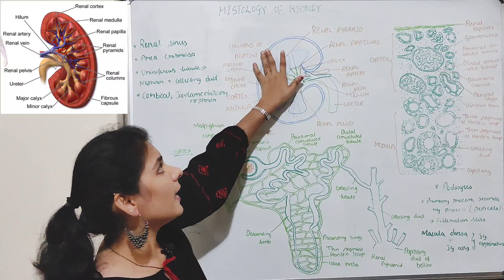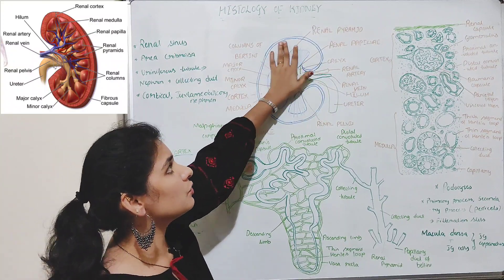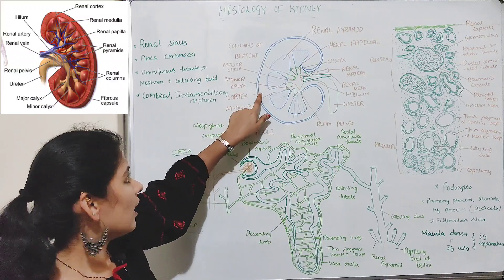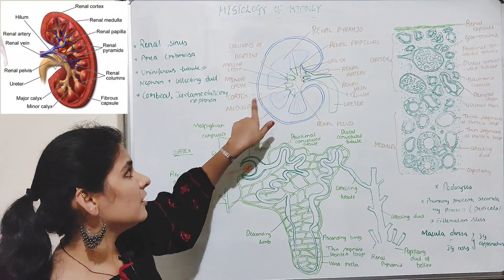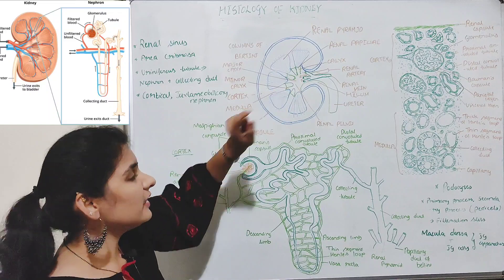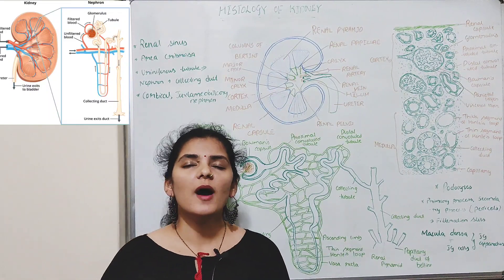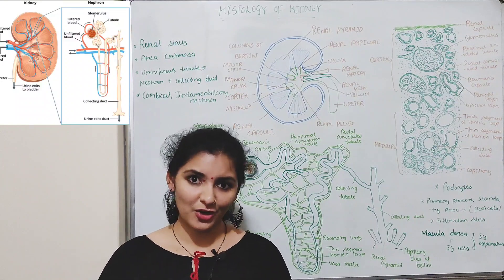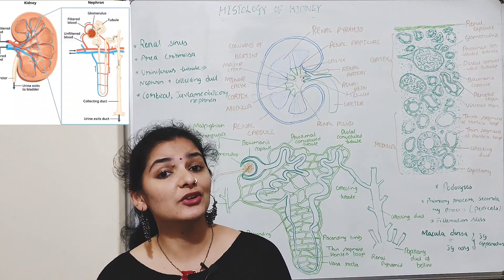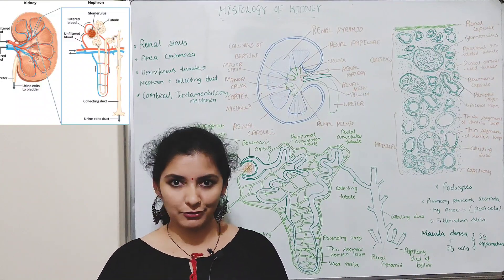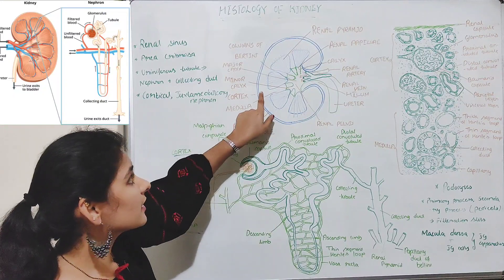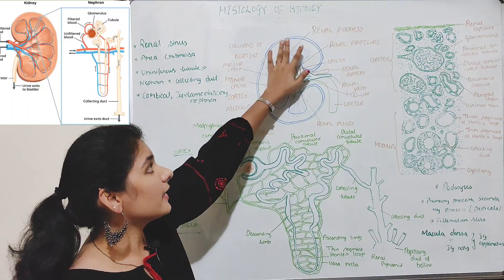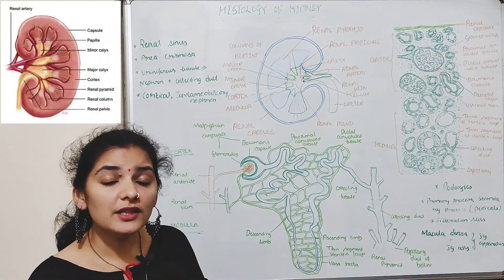Inner to this capsule is the parenchyma, the inner tissue of the kidney, made up of mainly two layers: the outer cortex region and the inner medulla region. Both the cortex and medulla regions consist of millions of urine-producing structures known as nephrons. The structural and functional unit of the kidney is the nephron, and it is present in both the cortex and medulla parts of the kidney.